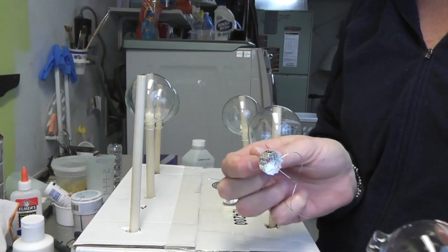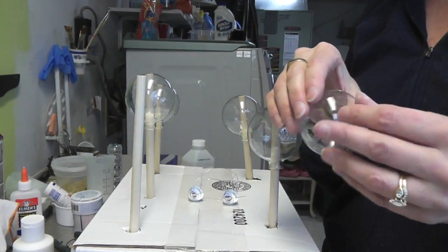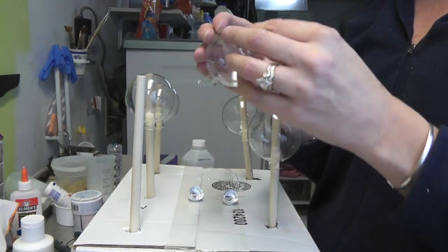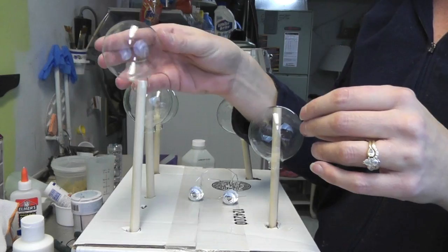Now these ornaments come with these little metal tops and all you do is pull it right out and that way you can put it right on the dowel like that.